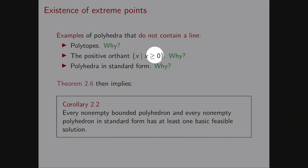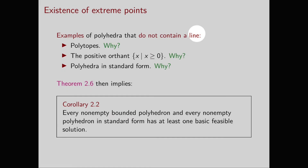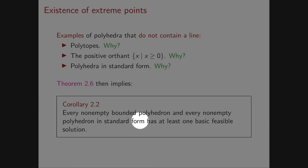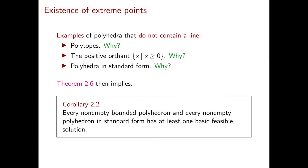Using these examples together with Theorem 2.6, we obtain the corollary that non-empty polytopes and non-empty polyhedra in standard form have at least one basic feasible solution. We've now understood exactly when polyhedra contain basic feasible solutions. In the next video we will understand when these basic feasible solutions are optimal solutions to our linear programming problem.